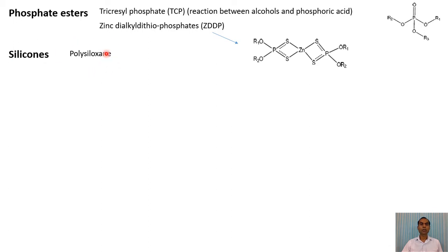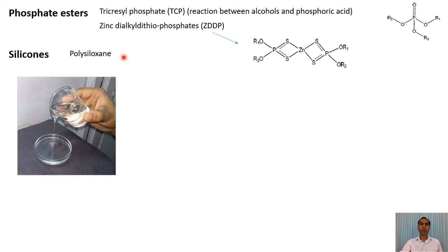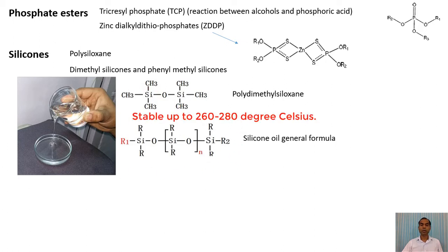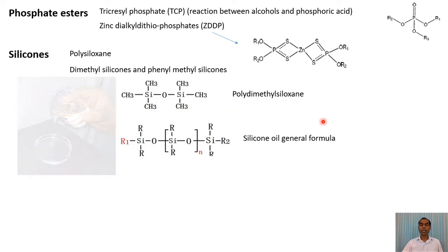Silicones, commonly known as polysiloxanes, are fluids that have silicon-oxygen bonds as well as silicon bonds with metal groups. Silicones are very useful because they can be obtained in a wide range of viscosities — from very low viscosity to very high viscosity fluids. They are high temperature materials suitable for high temperature applications, and they are also electrically insulating. Silicon fluids can be used as base oil for many applications.